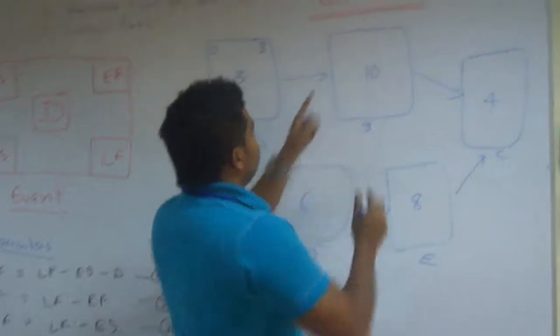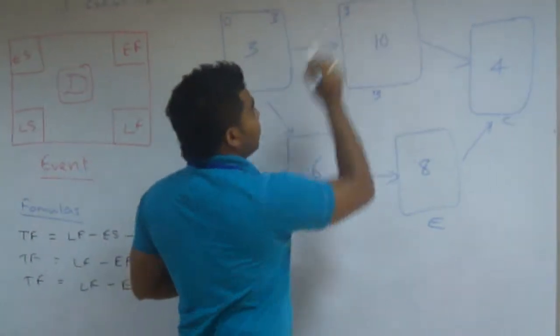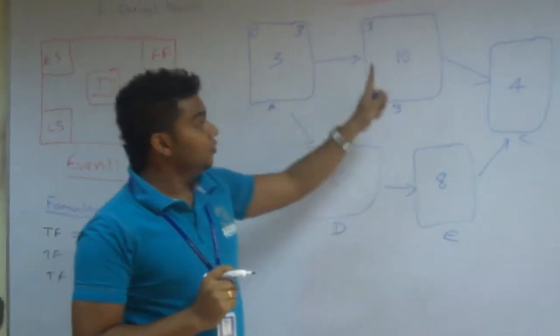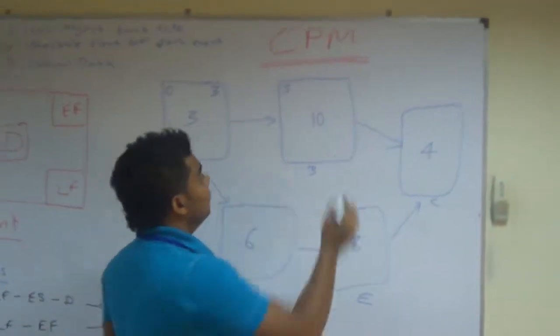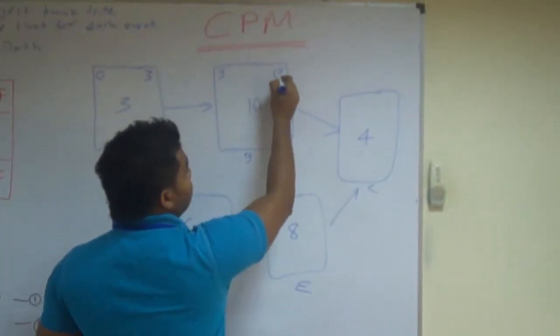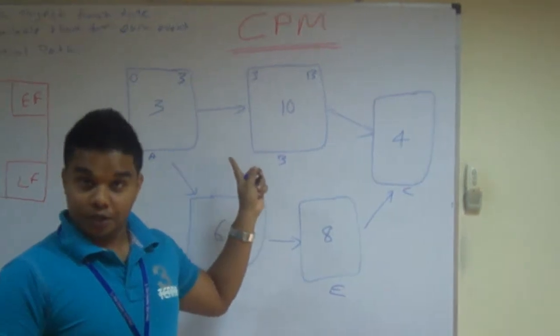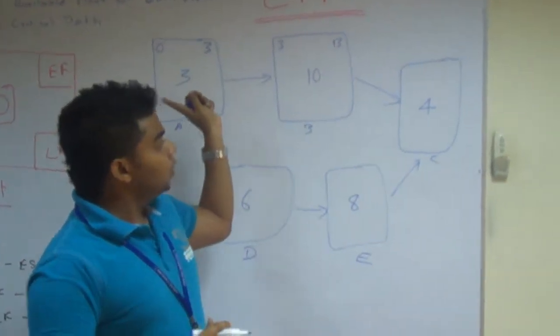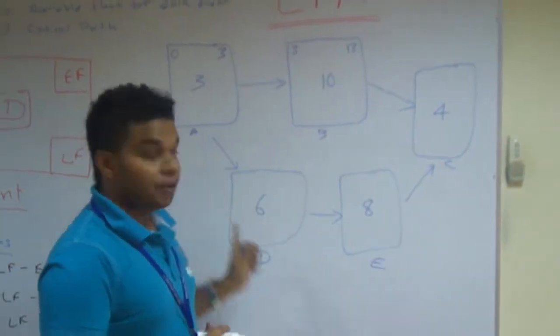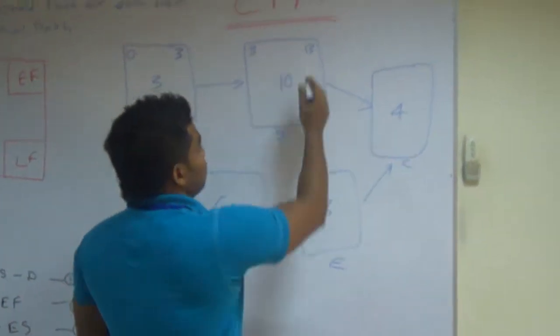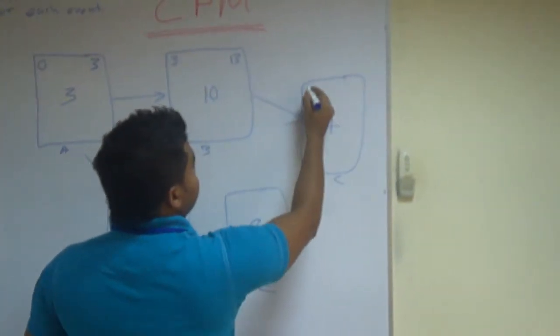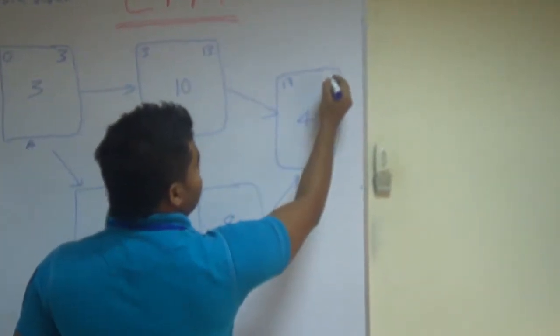Let's start our event at day three. That is our ES. Given ten days of duration, we will finish it at thirteenth. So you got it, right? So we will continue this to the remaining events as well. So I will start event C at thirteenth. I will finish it at seventeen.